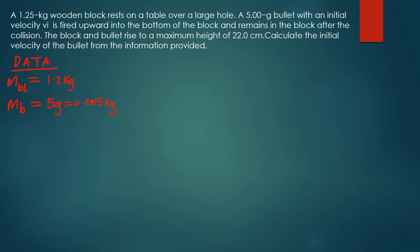The other given value is the maximum height reached by both the block and bullet after the collision. The maximum height is 22 centimeters, which converts to 0.22 meters — you divide by 100 to convert centimeters to meters. Now we can draw the free body diagram.